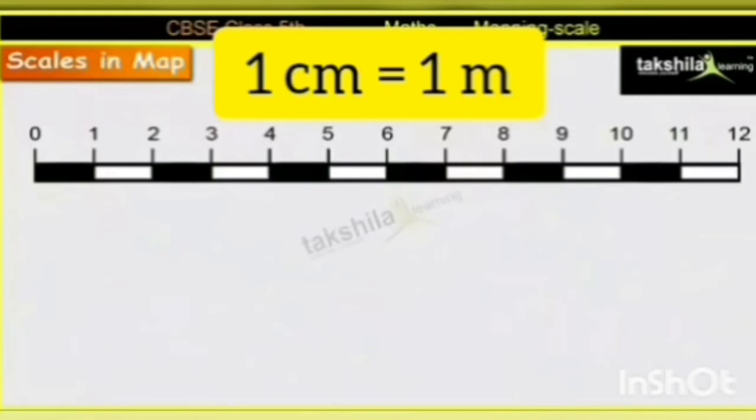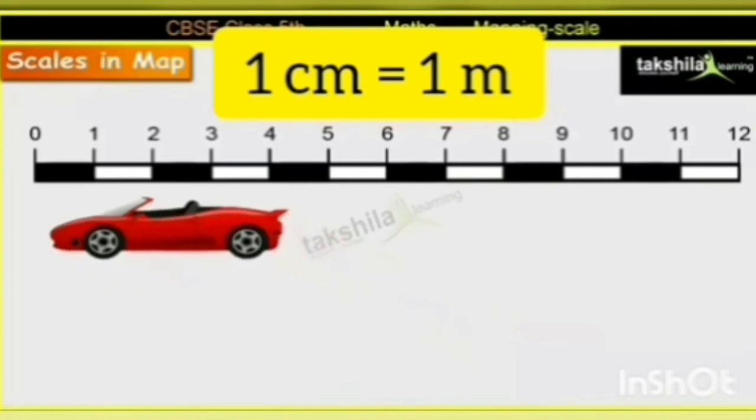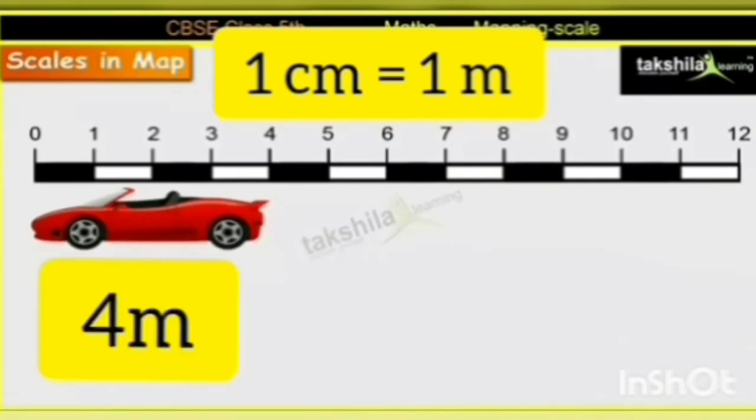Let us see one example. This is a picture of a car. In this picture, the car is 4 cm long. It is given that 1 cm is equal to 1 m. So, the length of the real car is 4 m.